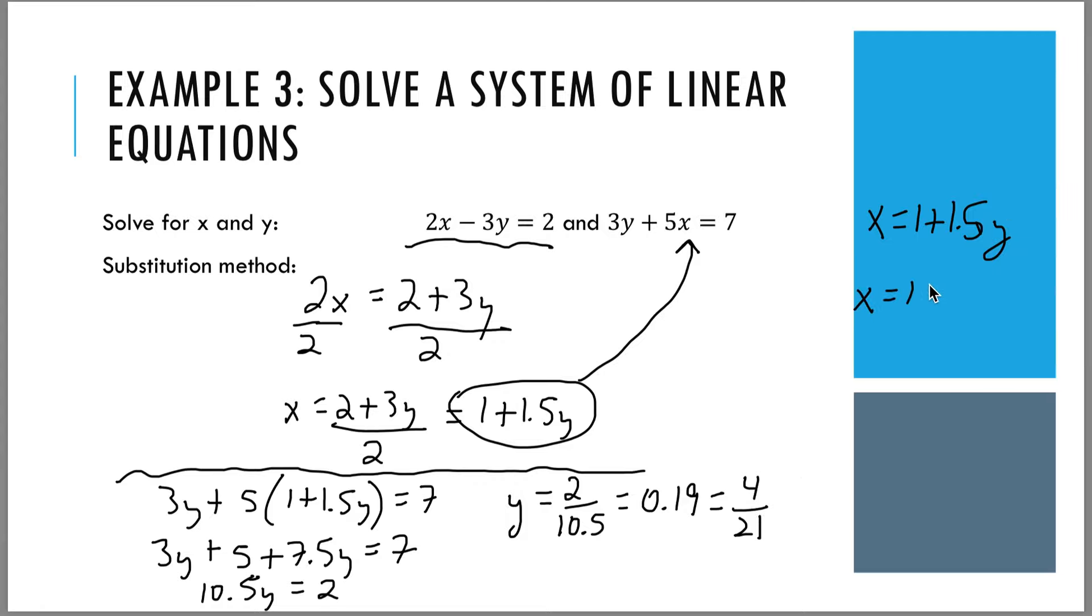To solve for x, I need to plug this exact answer into my expression here for x. We had x equals 1 + 1.5y. And then we plug in 4 over 21 for the y. x equals 1 + 1.5 times 4 over 21. When we do this, the exact answer is going to be 9 over 7. But as a decimal, x will be 1.3. We can round a final answer. So x is 1.3, y is 0.19. But when getting intermediate results to plug into other equations, you always want to use the exact answer so that you don't have rounding errors.